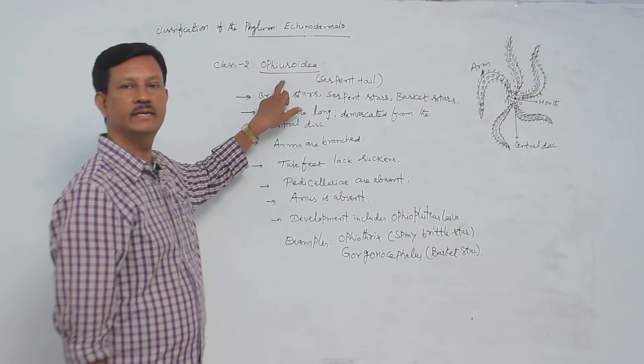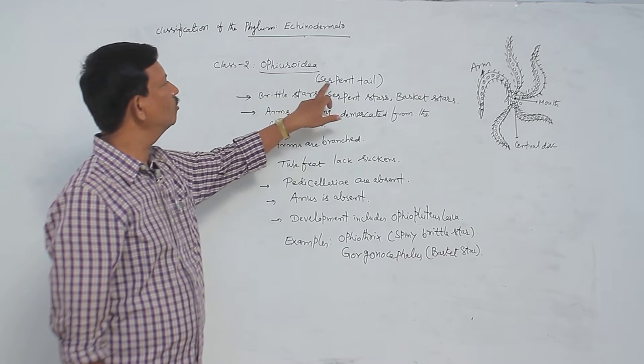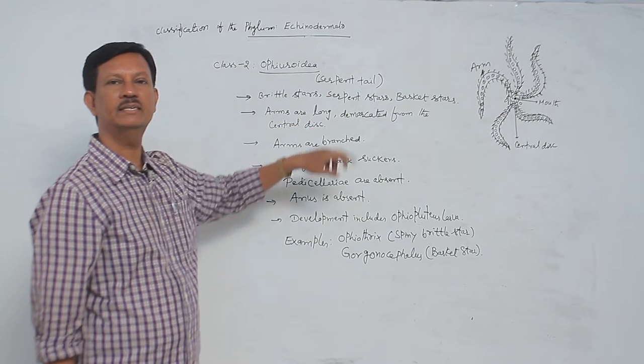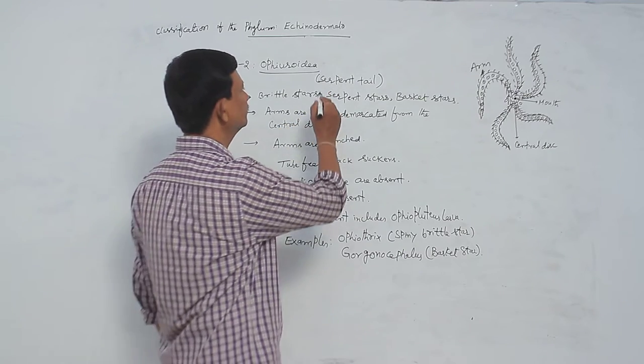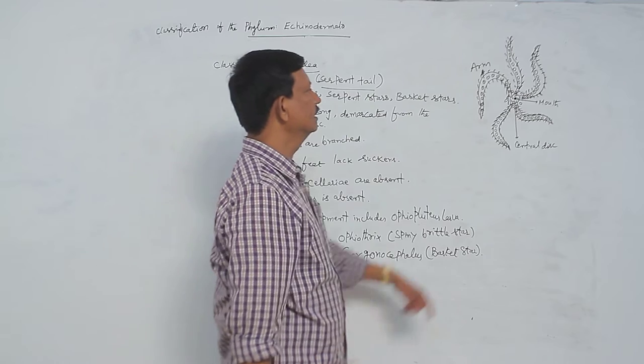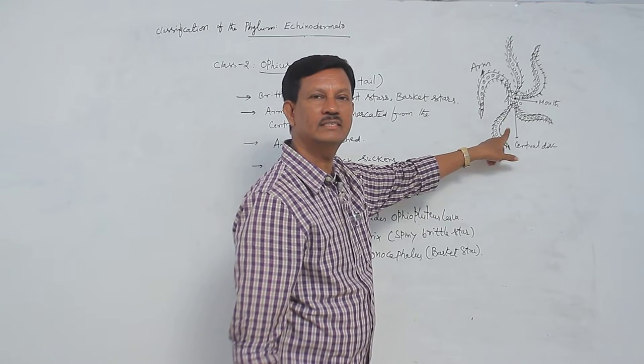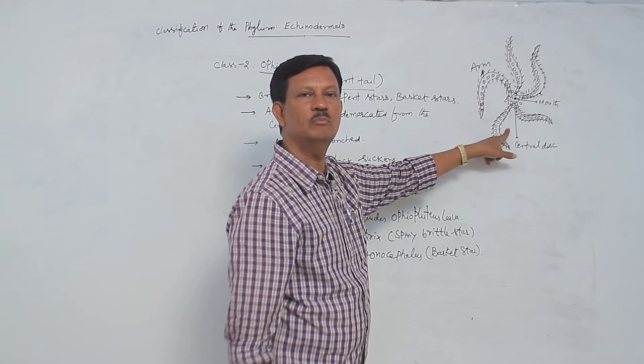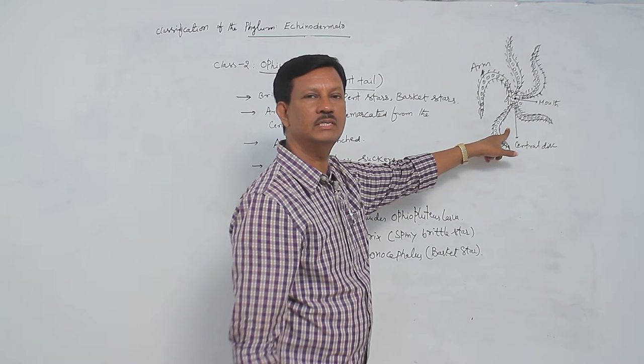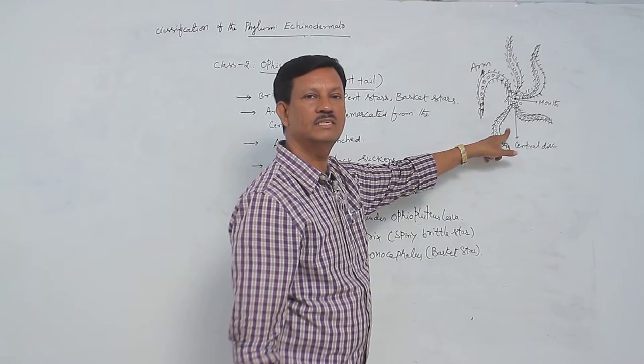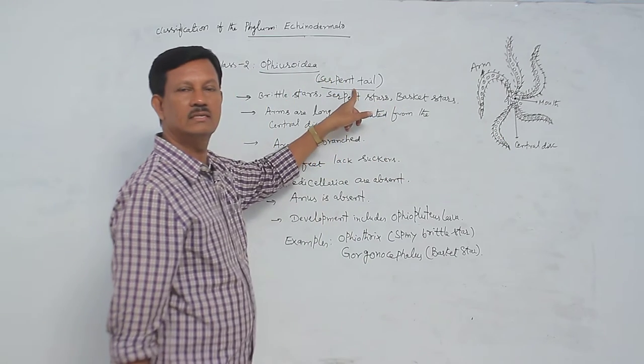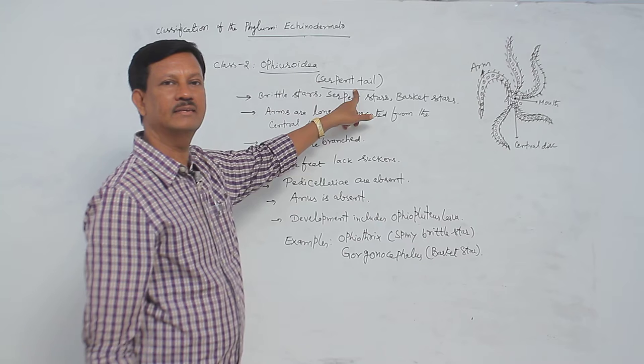Class Ophiuridea. These are commonly known as serpent tail animals. The arms resemble the serpent tail. The movement of the arms also resembles the movement of the snake. Hence they are commonly known as serpent tail animals.